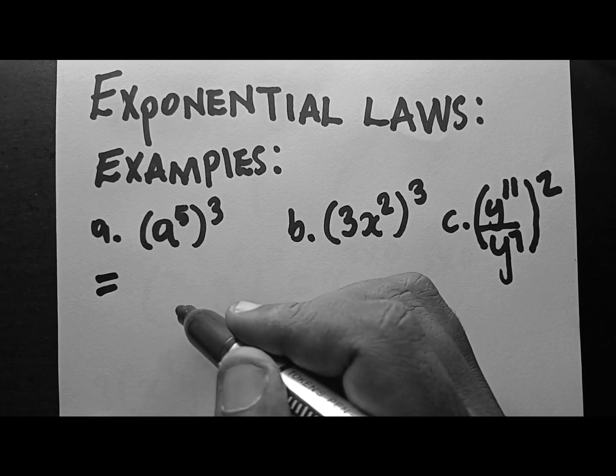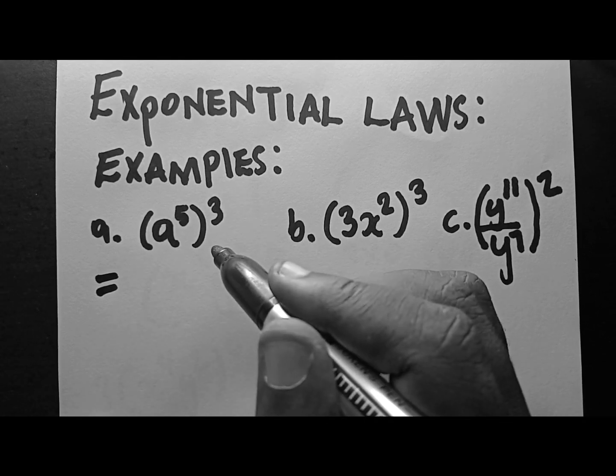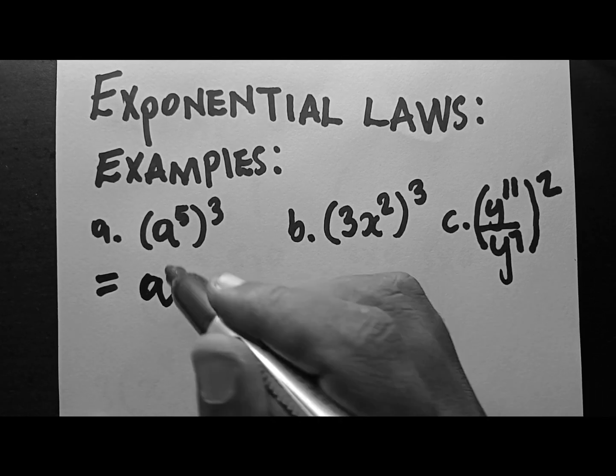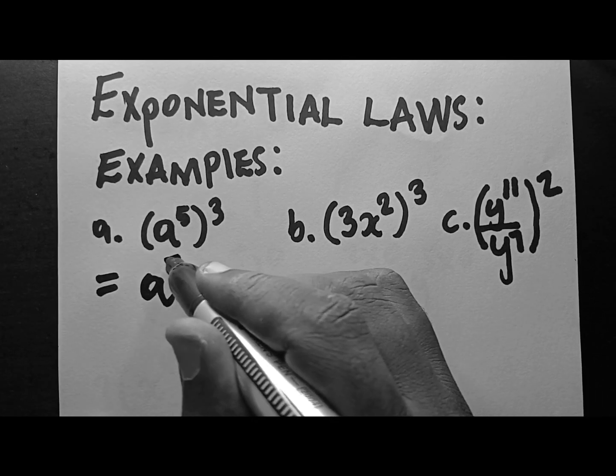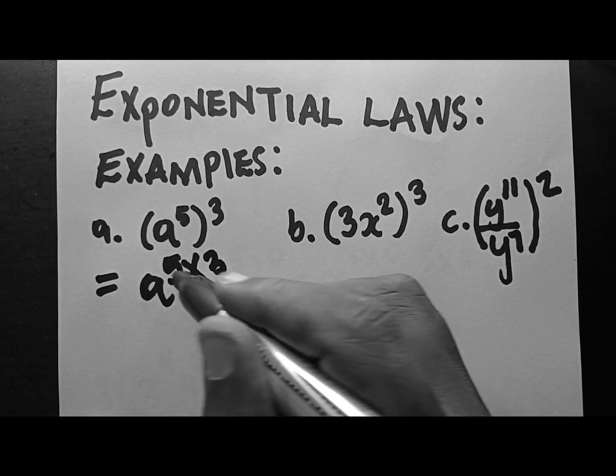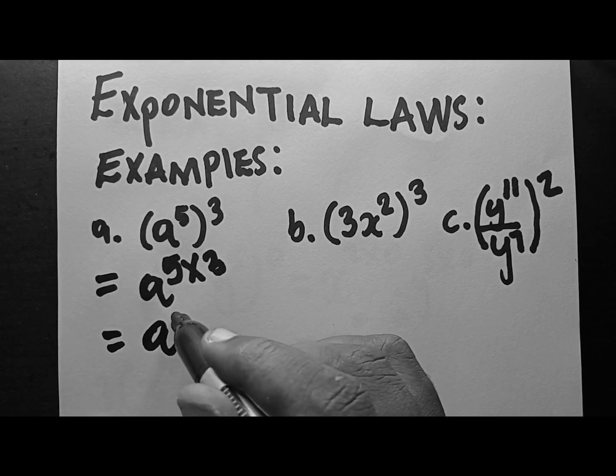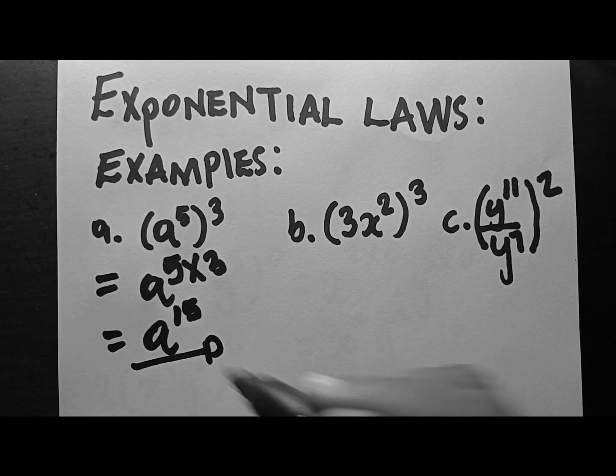This law says if you have a bracket and outside the bracket you have an exponent, you just keep the bases, then multiply the exponents. 5 times 3, this is going to be base a to the power of 15. Done.